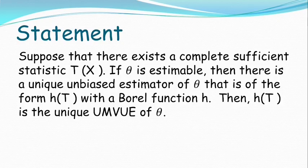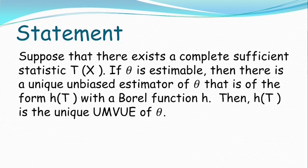Prathamayi statement ta dhekhenei. Suppose that there exists a complete sufficient statistic t. If theta is estimable, then there is a unique unbiased estimator of theta that is of the form h of t. Then h of t is the unique UMVUE of theta.